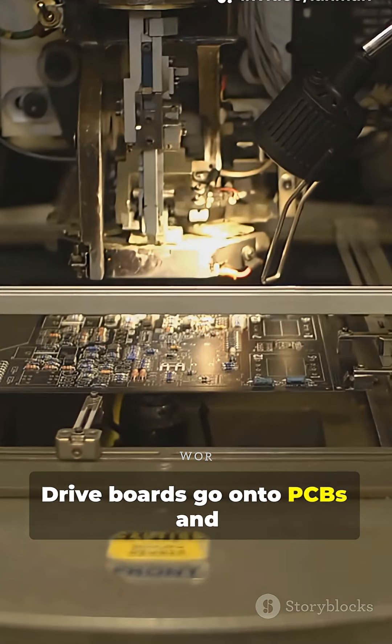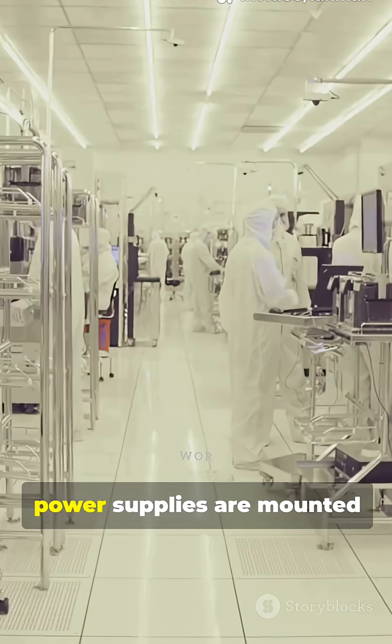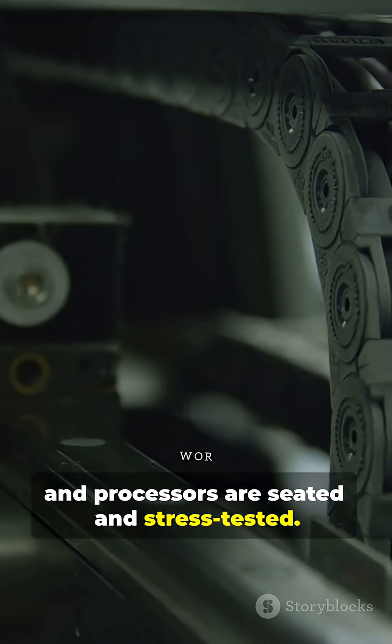Step 3. Electronics. Driveboards go onto PCBs and get flashed with firmware. Power supplies are mounted and tested for defects, and processors are seated and stress tested.